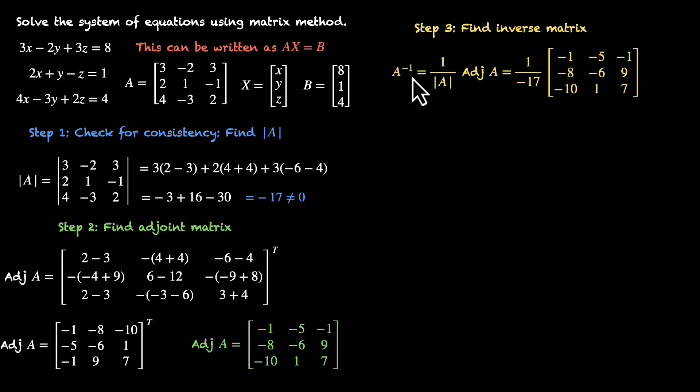Now that we have our A inverse handy, we are ready to tackle this equation. Let's now find X. That's AX = B. Let's get rid of this A. Because A is on the left hand side, we'll be pre-multiplying with A inverse. So that's A inverse AX = A inverse B. Left hand side becomes X, because this is I, and I times X is just X. And this becomes A inverse B. We already know B, and we have figured out A inverse.